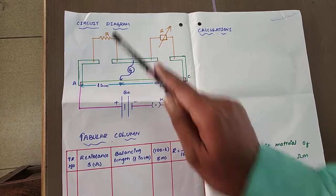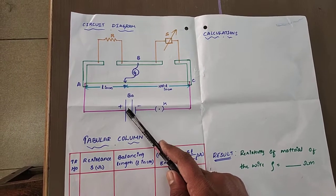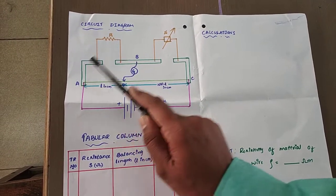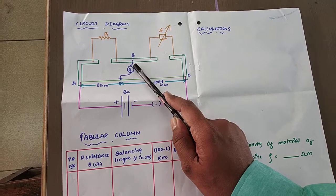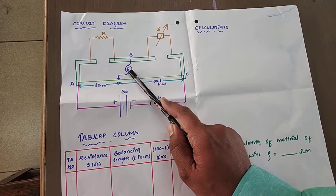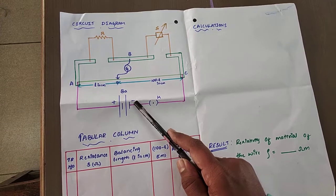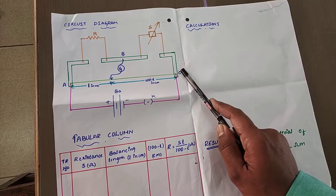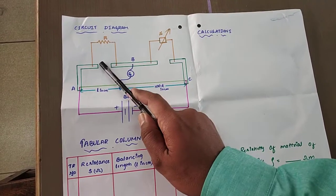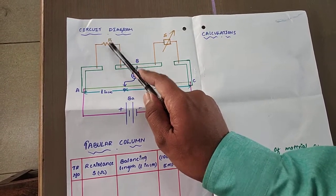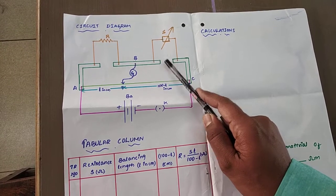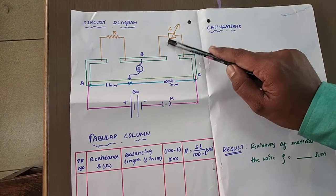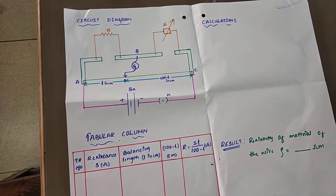Next is the circuit diagram. The positive terminal of the battery is connected to point A of the meter bridge. Point B of the meter bridge is connected to one end of the galvanometer. The other end of the galvanometer is connected to the jockey or slider. The negative terminal of the battery is connected to one end of the key; the other end of the key is connected to point C of the meter bridge. In the left gap, we connect the experimental wire; in the right gap, we connect the known resistance or standard resistance box.